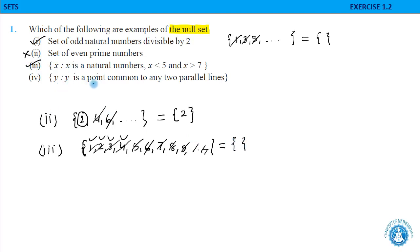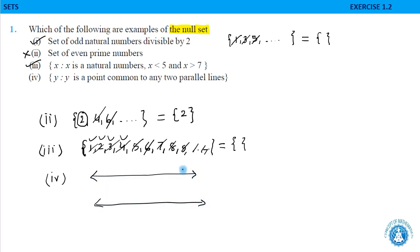Fourth: the set of all y such that y is a point common to any two parallel lines. Drawing two parallel lines, line l and line m, a point on one line cannot lie on the other. So there is no common point, and this would be an empty set.